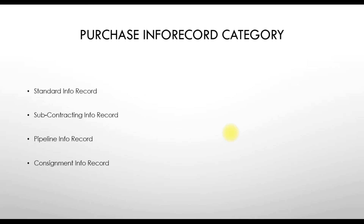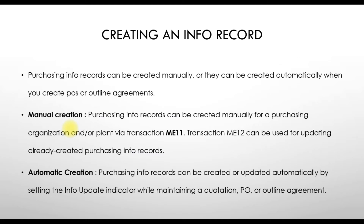There are different categories of purchase info records in SAP. First, we have the standard info record, then the subcontracting info record, the pipeline info record, and finally the consignment info record. Right now we are working with the consignment info record in SAP.